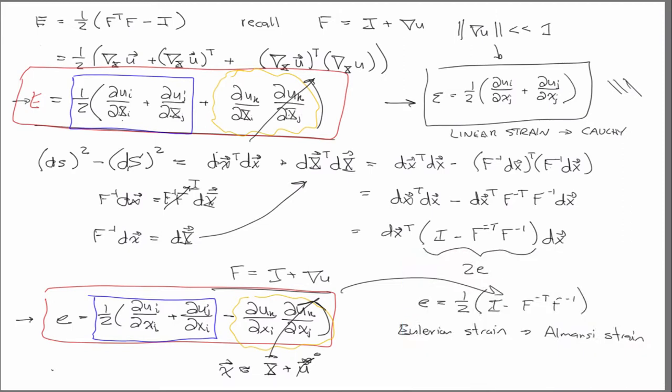So really, from this then, the only thing unresolved is when we introduced the definition of strain, we had this sort of arbitrary factor of one-half out here. And I said it would be clear in the small strain approximation where that comes from. So let's go ahead and show that.